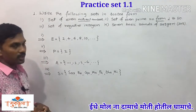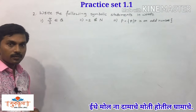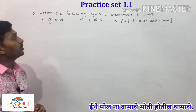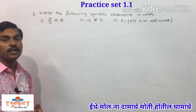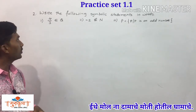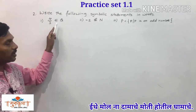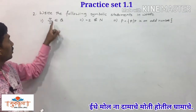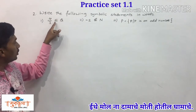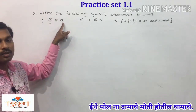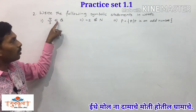Now we will take the second question from practice set 1.1. The second question says: write the following symbolic statements in words. We have some symbolic statements and we have to write them into words. The first statement is 4/3 ∈ Q, which we read as: 4 upon 3 belongs to Q, or 4 upon 3 is an element of Q.